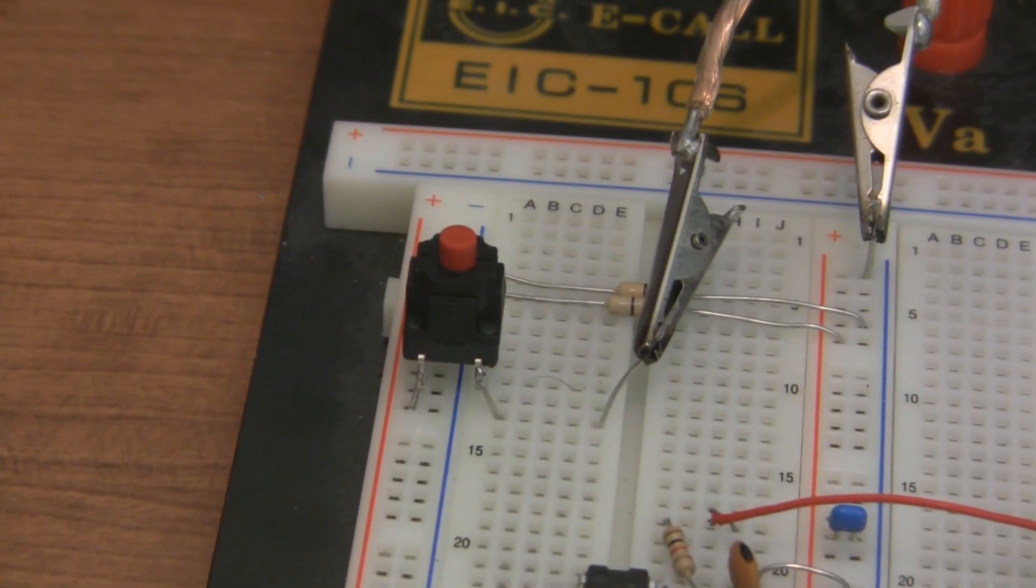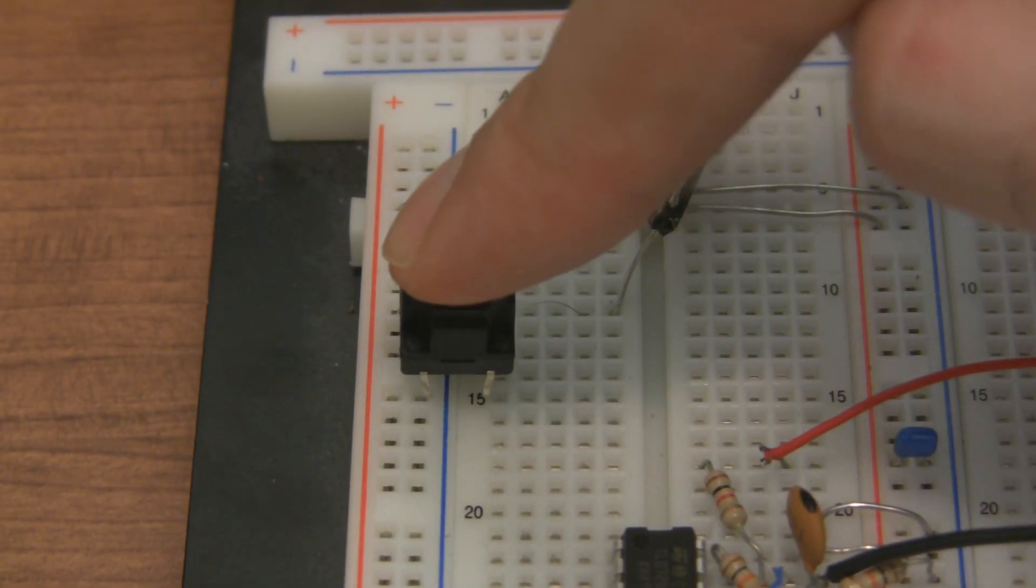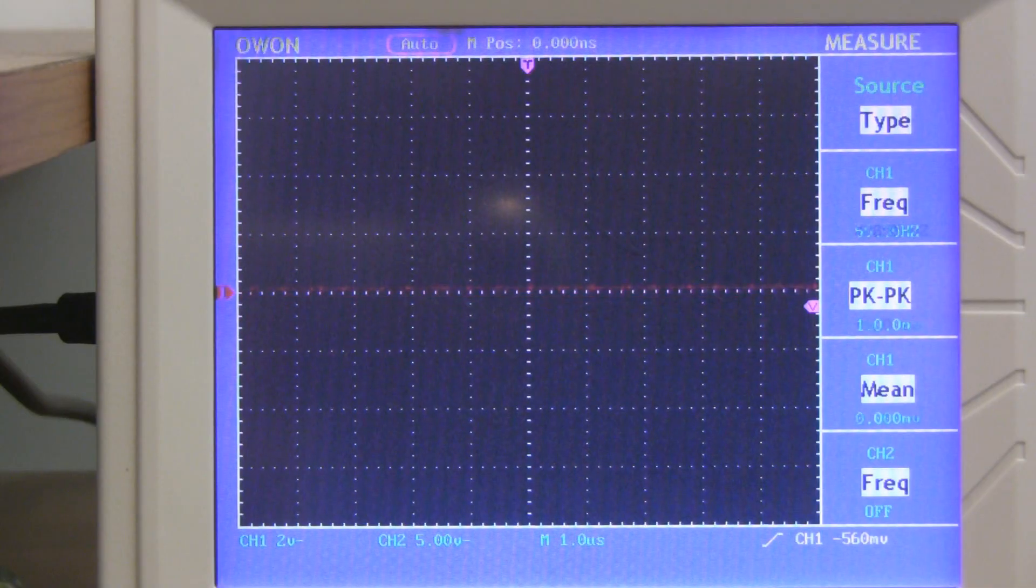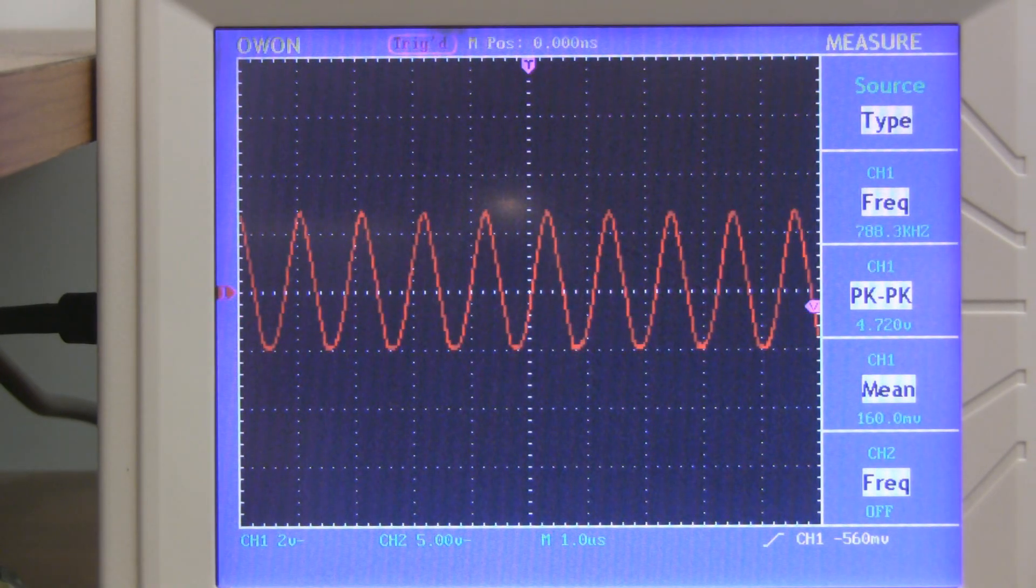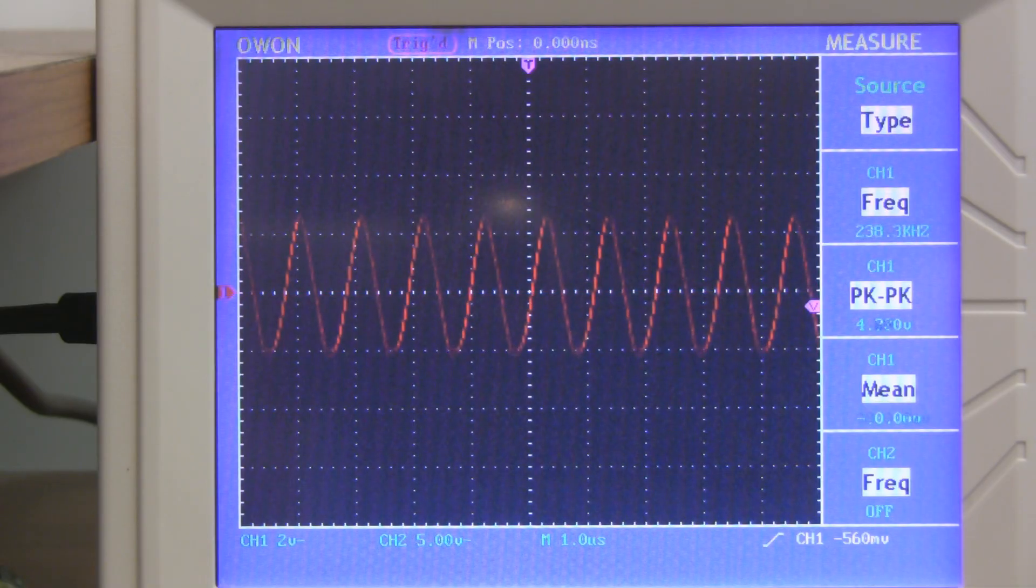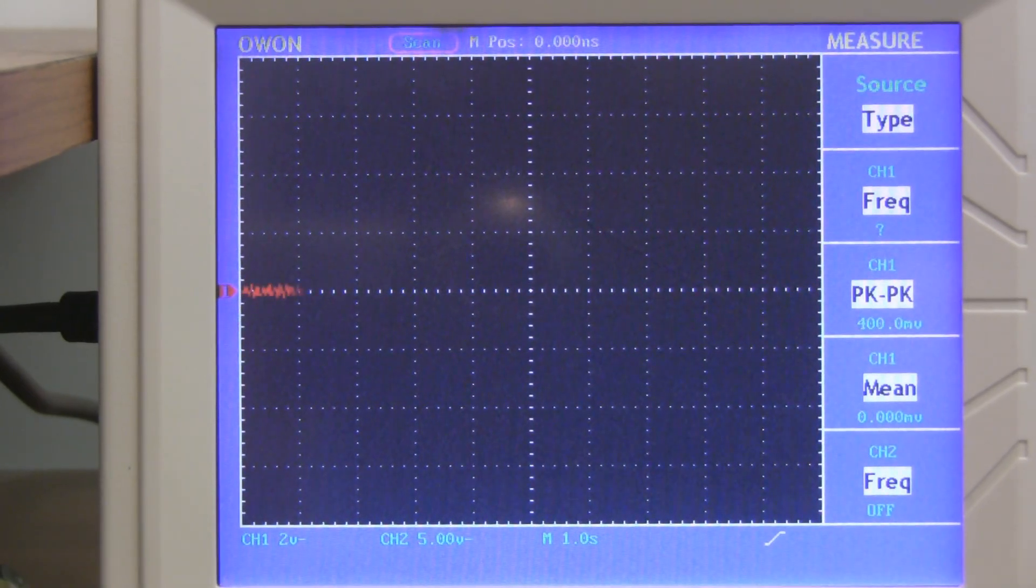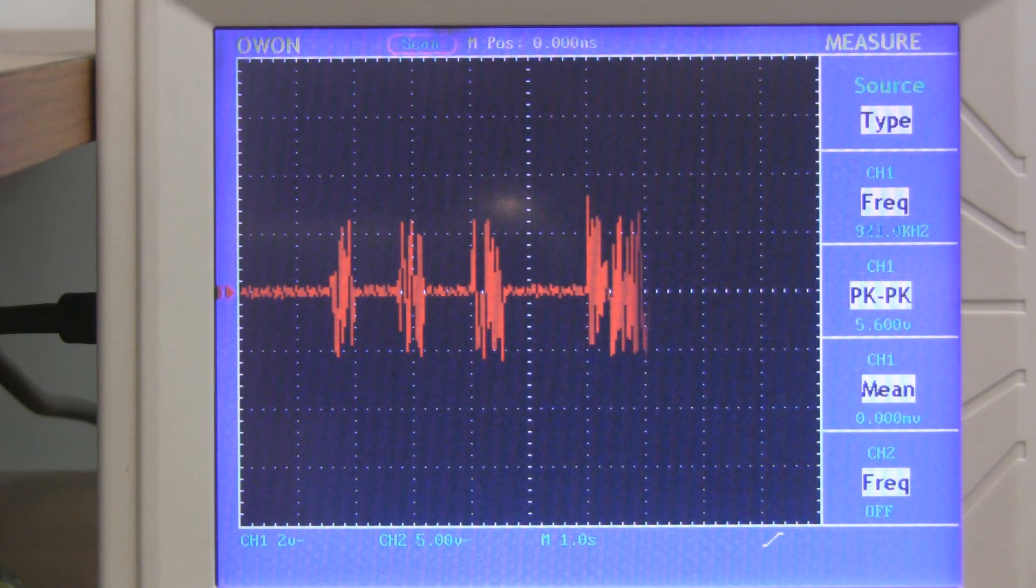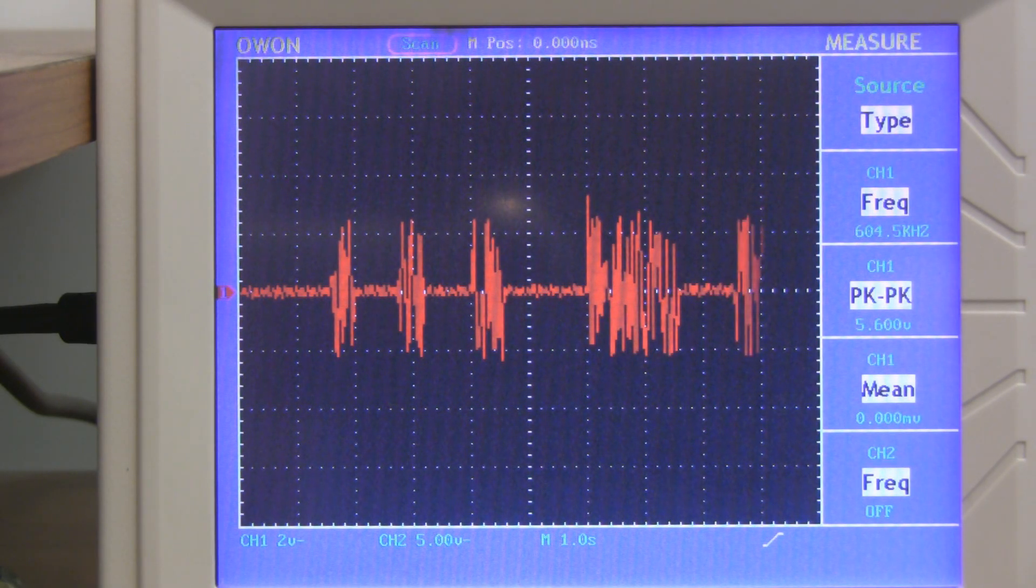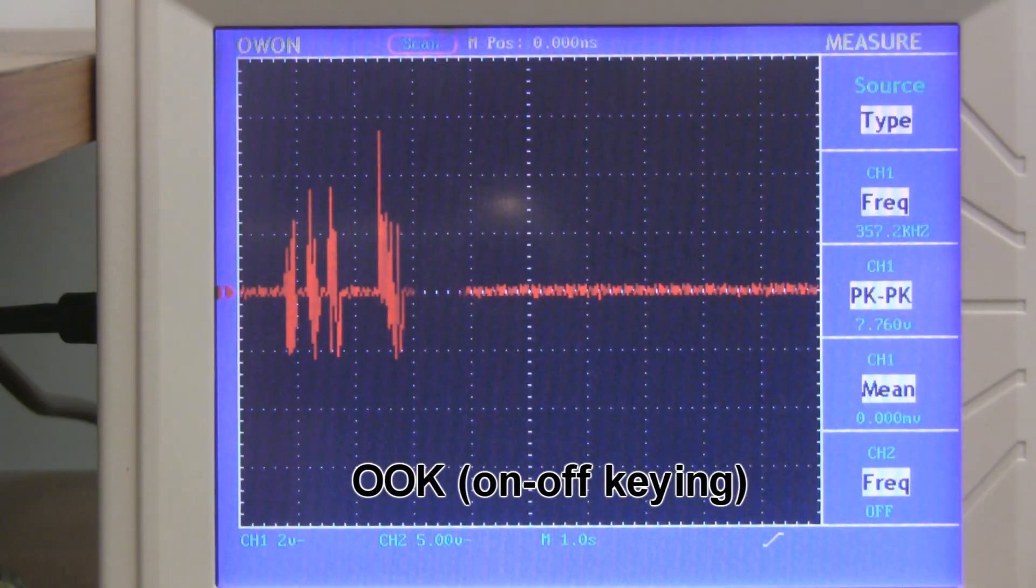Now this is where the fun starts. If I put a switch on the 9V supply line, I can turn the oscillator on and off, which will cause the waves to be transmitted in little pulses. So now I can tap things out in Morse code and somebody tuned in to the same frequency can listen. The modern term for this is on-off keying because the only thing I'm doing is turning the oscillator on and off and sending out radio waves in little pulses.